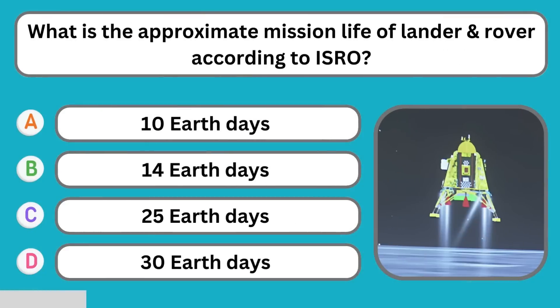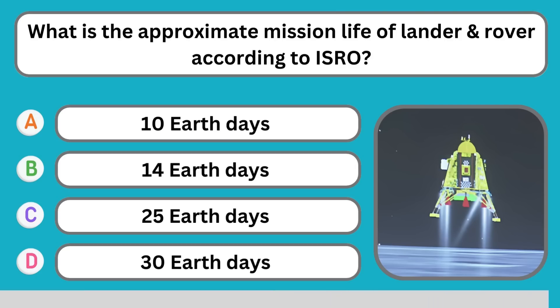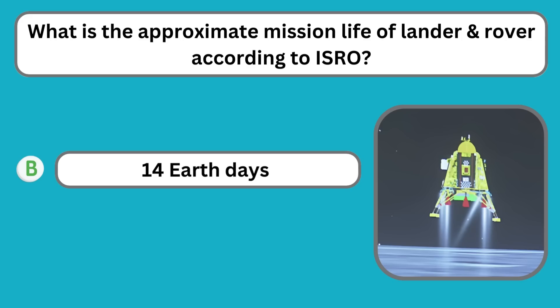What is the approximate mission life of the lander and rover according to ISRO? 14 Earth days.